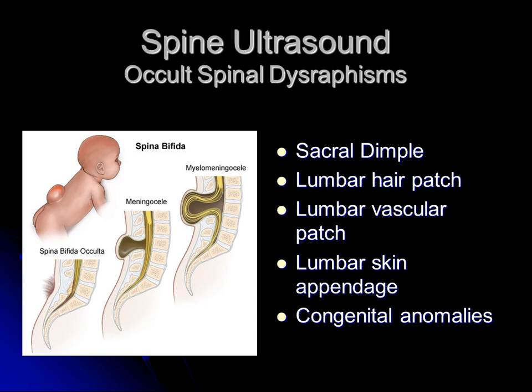Next I'll move on to spine ultrasound. The main reason I do spine ultrasound is to look for occult spinal dysraphism — meaning skin-covered dysraphism. Unlike myelomeningocele, which is not skin-covered and usually very obvious, occult dysraphism is less apparent. By far the most common reason I do spine ultrasound is for sacral dimple. Most are very low dimples — almost coccygeal dimples over the coccyx — and the pretest probability of a positive study is very low. However, if there are higher skin manifestations like a lumbar hair patch, lumbar vascular patch, or skin appendage, there's much higher likelihood the test will be positive. We'll also often do ultrasound if there are other congenital anomalies associated with tethered cord dysraphism, such as imperforate anus.